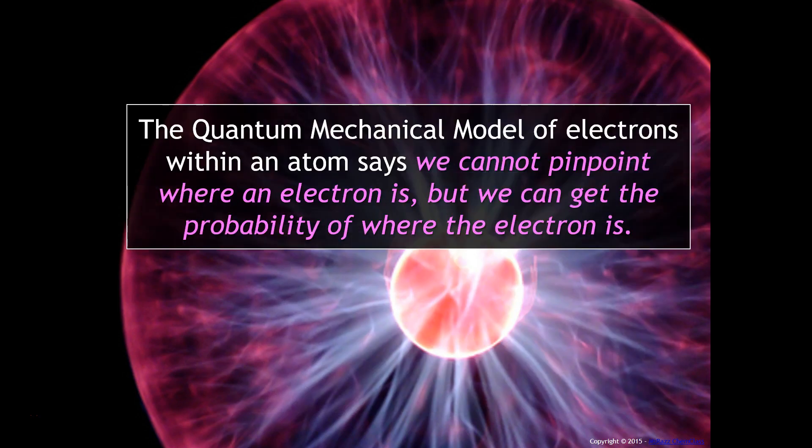The quantum mechanical model of electrons within an atom says that we cannot pinpoint where the electron is, but we can only get the probability of where the electron is.